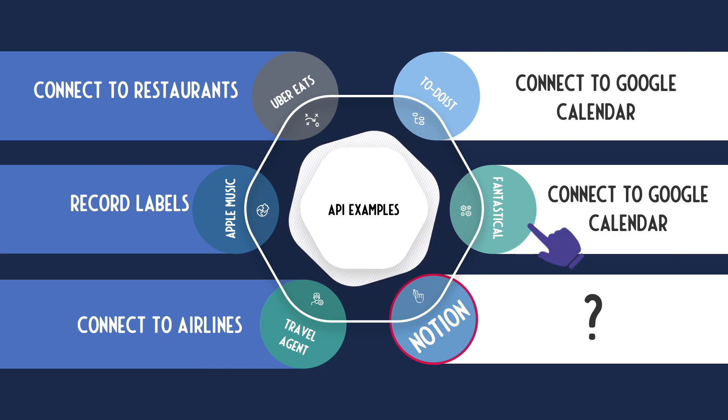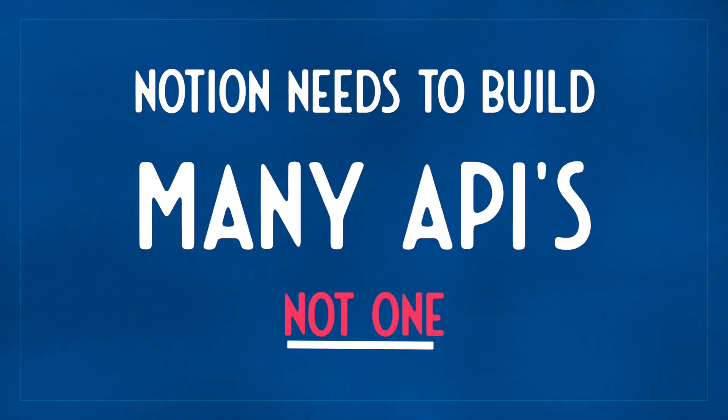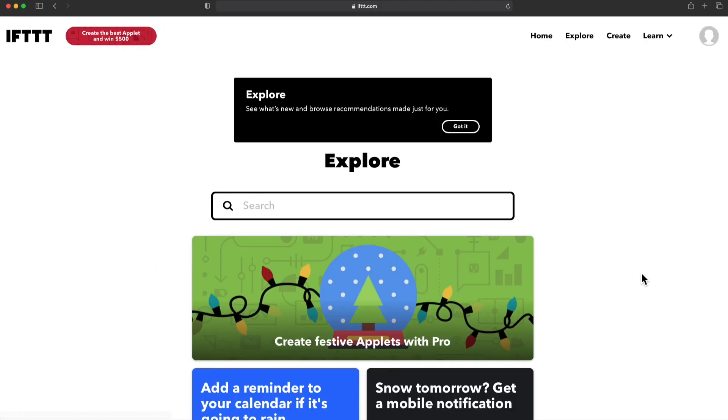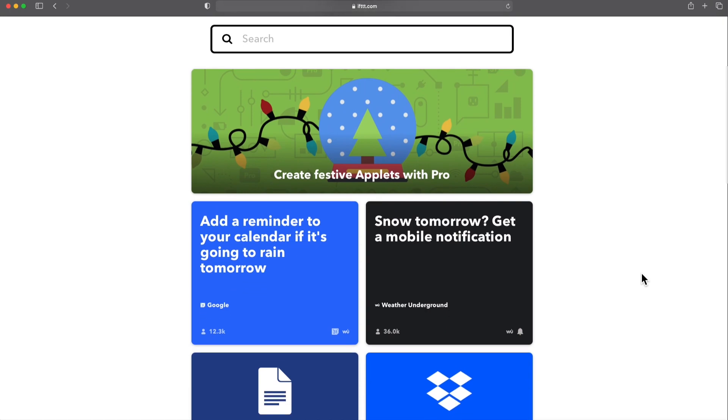Take the example of Fantastical or Todoist, which is integrated into your Google Calendar both ways. Since each service requires one or more APIs and each API could perform a few different services, Notion will need to build different APIs to suit each individual service. App integrators like Zapier, Integromat, Automate.io, and IFTTT can act as a tool to connect multiple apps for a small transaction fee. If Notion prioritized its API build towards these services, it would drive traffic towards a hub, and individuals could use Zapier-type services to build their own integrations.